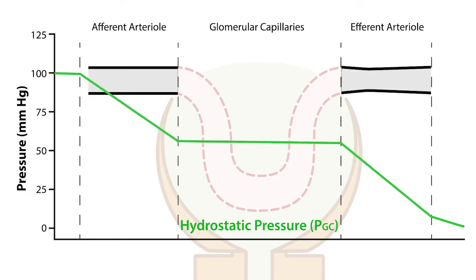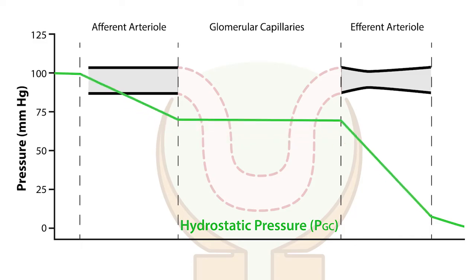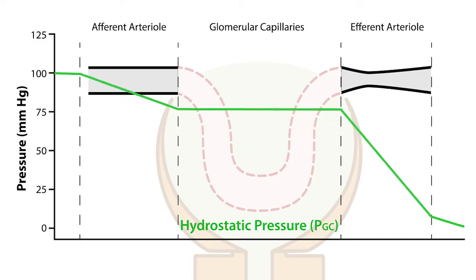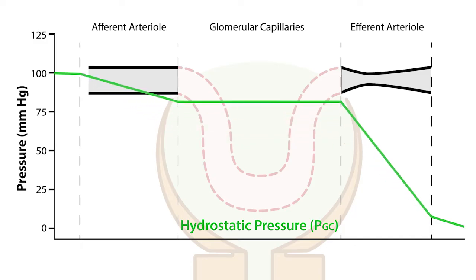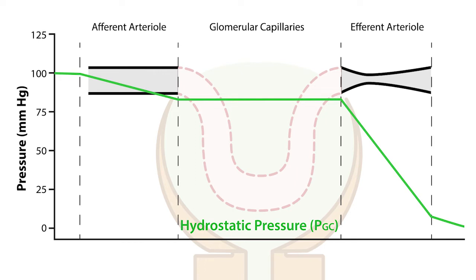The increase in hydrostatic pressure associated with the increased efferent arterial resistance is due to decreased outward flow via the efferent arterial. This occurs because the efferent arterial is downstream of the glomerular capillaries, which creates a back pressure within the glomerular capillaries themselves.